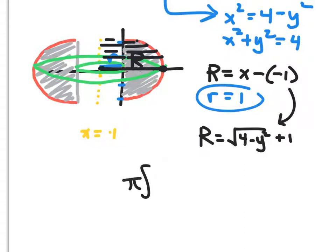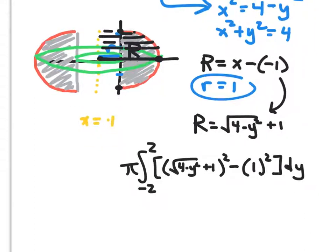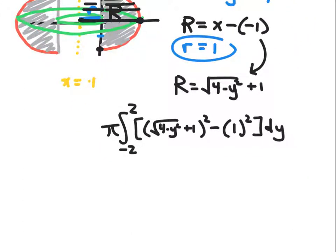We're going to take pi from 0 to, excuse me, from negative 2 down here up to positive 2 up here of big R squared, which would be the square root of 4 minus y squared plus 1. That's big R squared minus little r squared, which is 1 squared. Again, we're integrating with respect to y. And that right there, we would go straight to the calculator. I would probably, if I were you, just so I didn't screw anything up, type this in as y1. Type this in as y2.